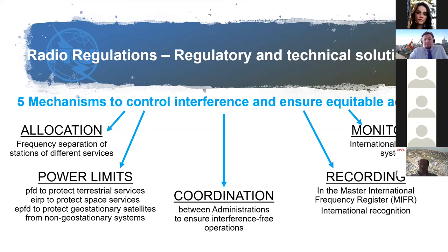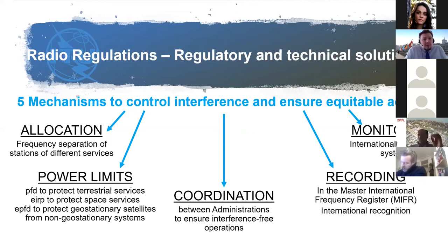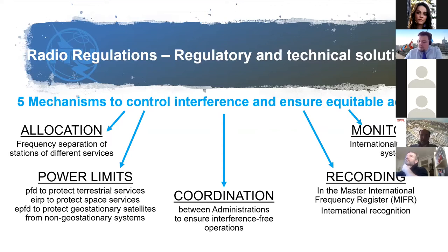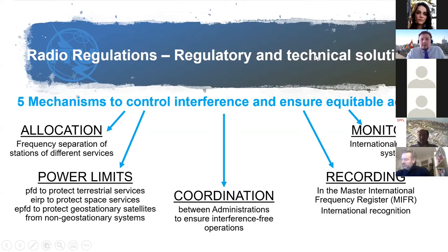Finally, when you have done all this process, national administrations issue licenses to the user of the satellite system, allowing them to operate. This works if administrations issue licenses compliant with the allocation, power limits, coordination mechanism, and recording — and also if the company or individual receiving the license operates in accordance with it. National administrations then monitor compliance with the scope of their license.